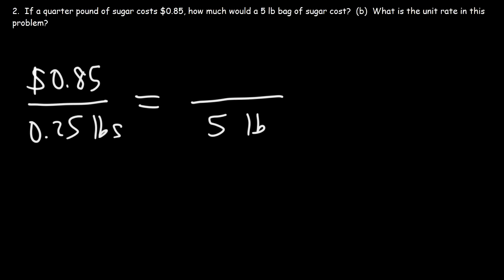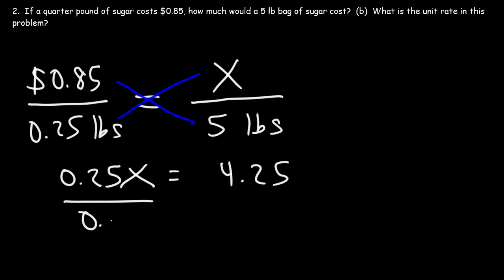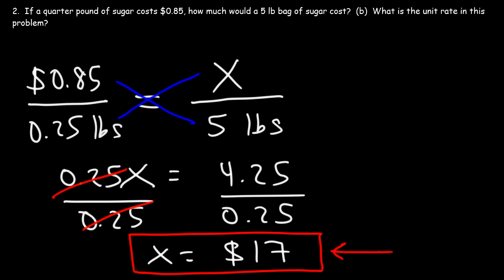And we want to find the cost for a five pound bag of sugar, so we're going to put x on top. Since we have the cost on the top on the left side, it needs to be the same on the right side. So let's cross multiply. This is going to be 0.25 times x, and that equals 0.85 times 5, which turns out to be 4.25. Now, to get x by itself, we need to divide both sides by 0.25. 4.25 divided by 0.25 is 17. So the cost is $17 for a five pound bag of sugar. So that's the answer for part A.